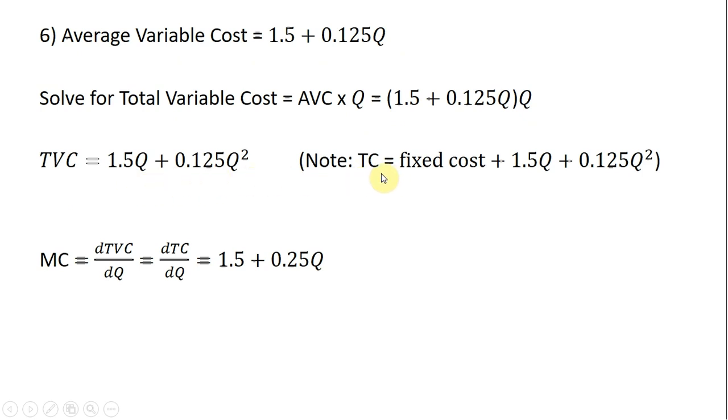And just note here, total cost would just be some constant plus total variable cost. We don't know what that constant is, so I'll just put fixed cost here. But regardless, taking the derivative of total variable cost, or taking the derivative of total cost, will give us 1.5 plus 0.25Q. Bringing the 2 down in front, 2 times 0.125 is just 1/4 or 0.25.